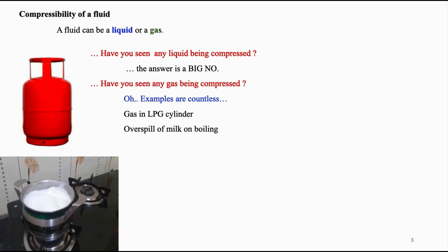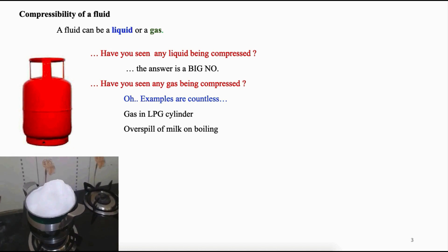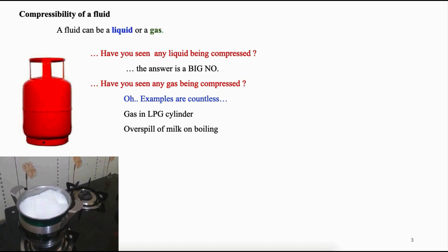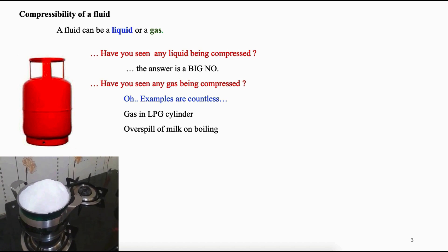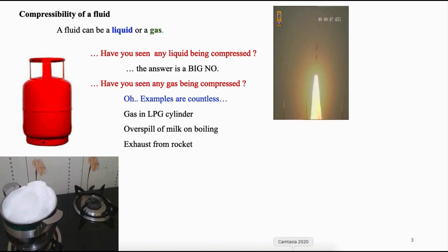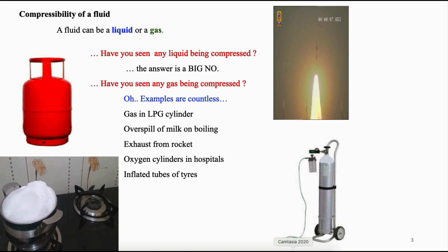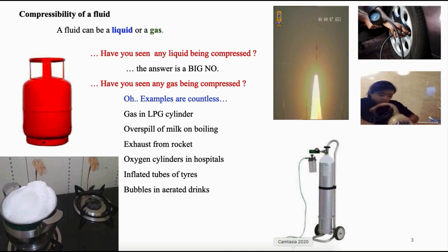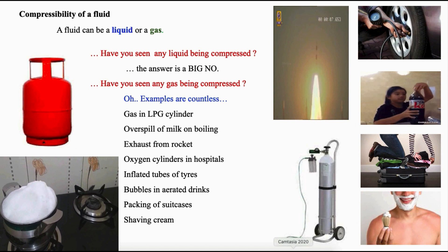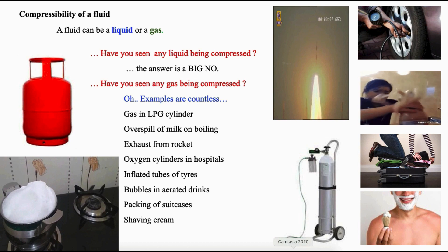Observe the overspill of milk on boiling — it spills if unchecked. Milk mainly contains water and fats; fats being lesser in density than water. During boiling, fats get separated and form a screen on water. So water is at the bottom, fat is at the top. During boiling, water expands, hence the spill. Exhaust from rockets — are you not surprised to see how much gas was hiding in such a slim rocket? Similar examples include oxygen in oxygen cylinders, air in inflated tires, air bubbles in aerated cold drink bottles, suitcases we carry during journeys, and foam of a shaving cream. These examples clearly tell us the role of compressibility in day-to-day life.